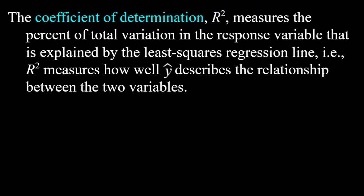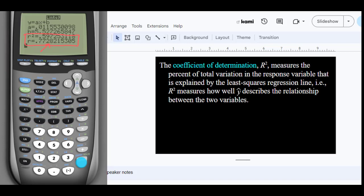On that calculator screen, we also saw an r² value. The coefficient of determination, r², measures the percent of total variation in the response variable that is explained by the least squares regression line — in other words, how well ŷ describes the relationship. Our r² value is 0.597, meaning about 60% of our values are well described by the line. That's not super high, but it's decent.